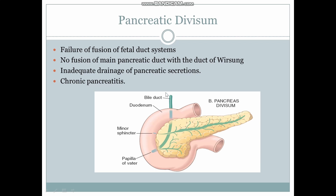Pancreatic divisum means the failure of fusion of the pancreatic duct systems. The main pancreatic duct, the duct of Santorini, and the duct of Wirsung are all visible here. As you can see, there is a failure of conjugation of the main pancreatic duct with the duct of Wirsung. As a result, the main pancreatic duct drains the major portion of the pancreas — the body and tail — through the minor sphincter, which has a very small caliber, causing inadequate drainage.